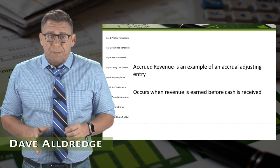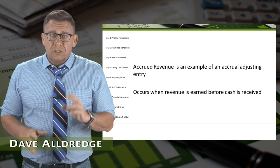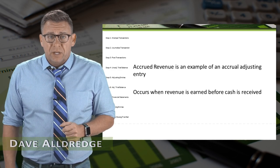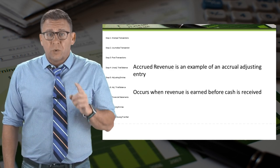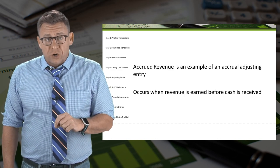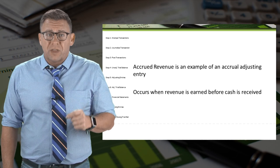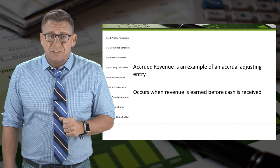Accrued Revenue is an example of an accrual adjusting entry. It occurs when revenue is earned before the cash is received.